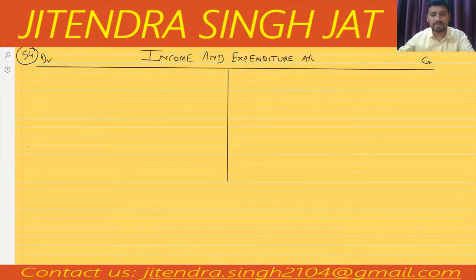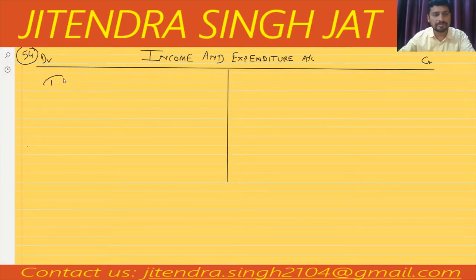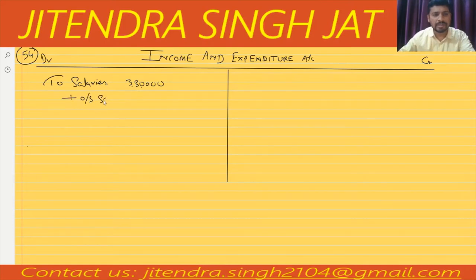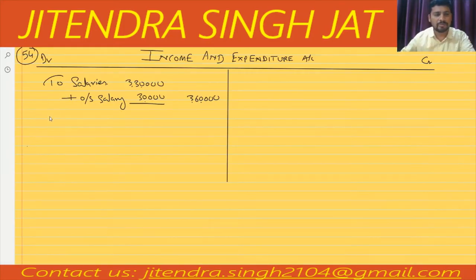Now let's start the income and expenditure account. We start with the expenditure side — salaries: 3,30,000. We have seen that one month salary is outstanding, so outstanding salary will be added. 3,30,000 plus 30,000 equals 3,60,000. Then for sports material, we calculate sports material consumed in the inner column.